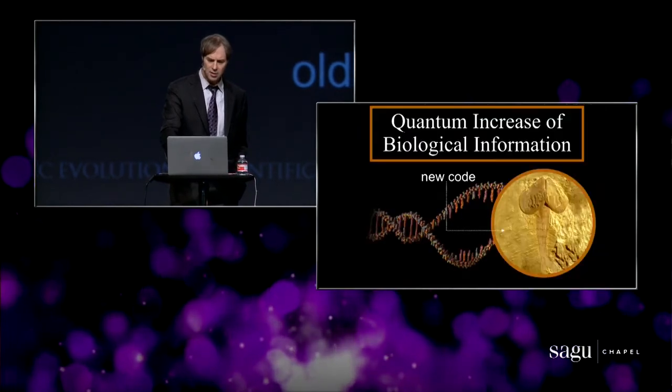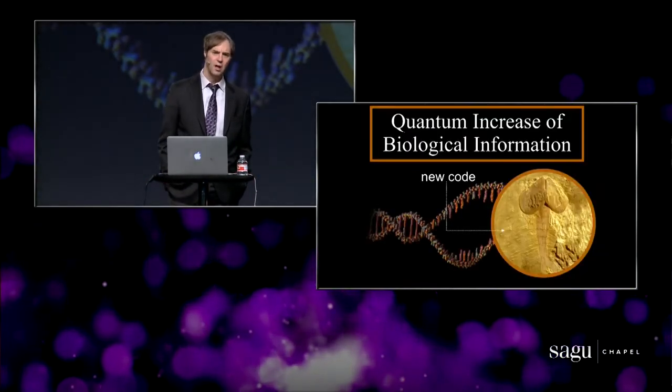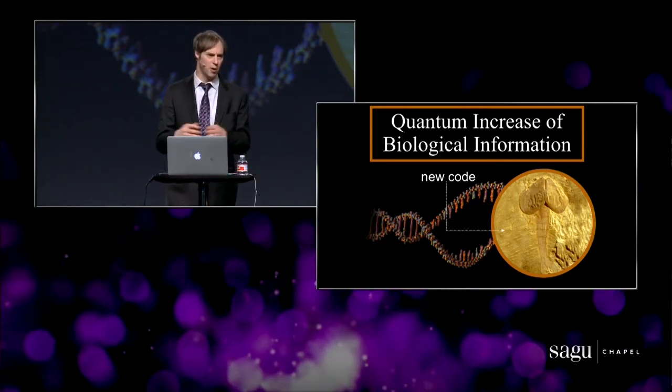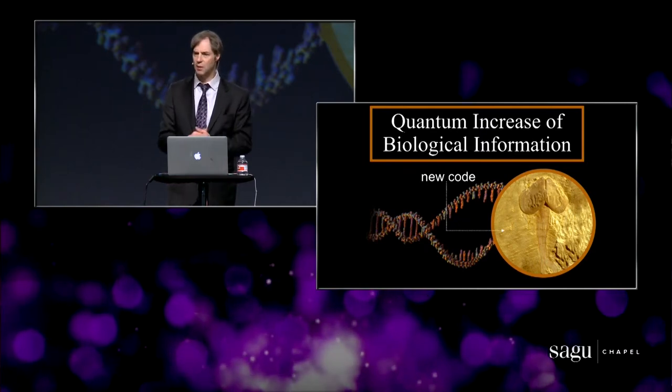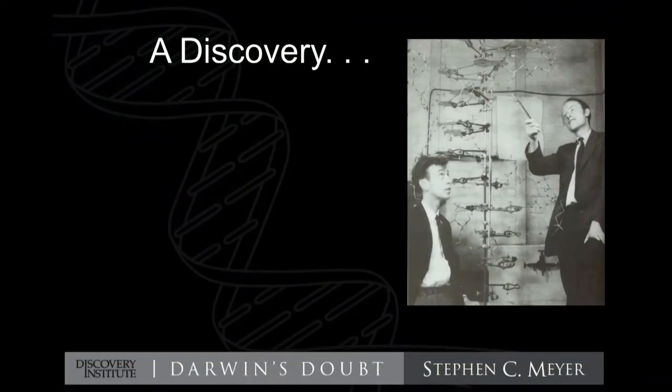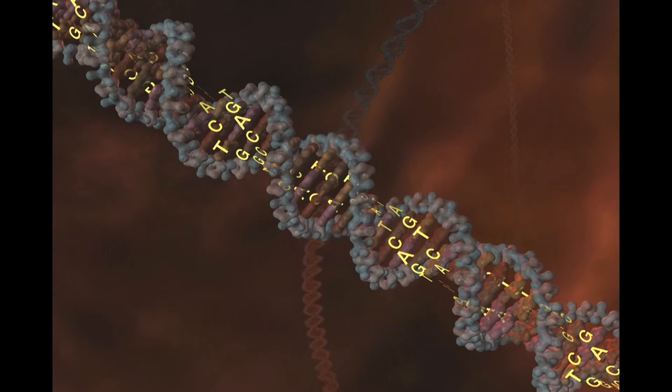It turns out — and this is the most stunning discovery of 20th century biology — that the same thing is true of life. If you want to build a new form of life, one of those Cambrian animals, or new mammals, reptiles, birds — anything — you've got to have new code, new information, new instructions to build new biological form. We began to appreciate this starting in the 1950s with the discovery of the structure of the DNA molecule by Watson and Crick.